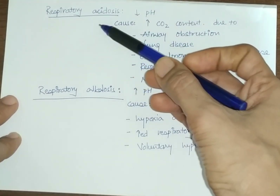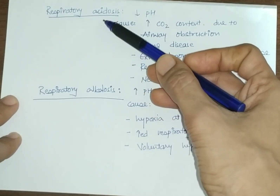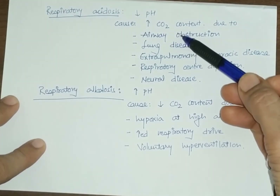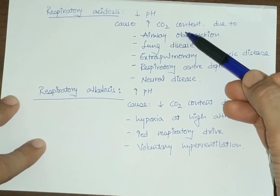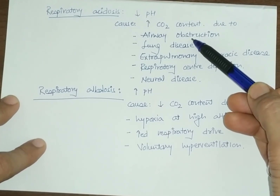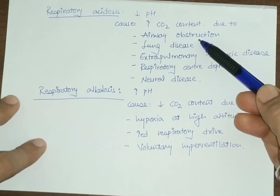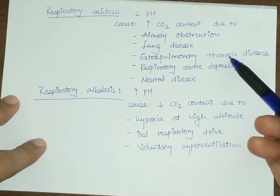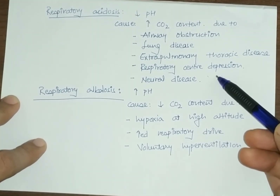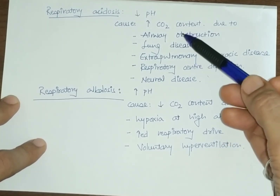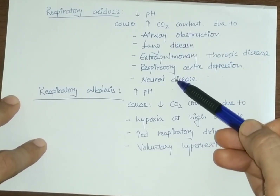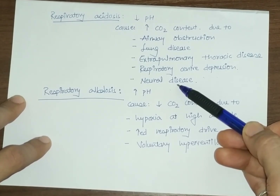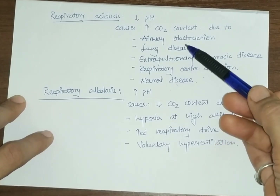In respiratory acidosis there is a decrease in pH caused by increased CO2 content. Causes include airway obstruction, lung diseases, extra-pulmonary thoracic diseases, respiratory center depression, and neural diseases. Respiratory muscle weakness conditions such as Guillain-Barré syndrome, poliomyelitis, amyotrophic lateral sclerosis, and multiple sclerosis also cause respiratory acidosis.